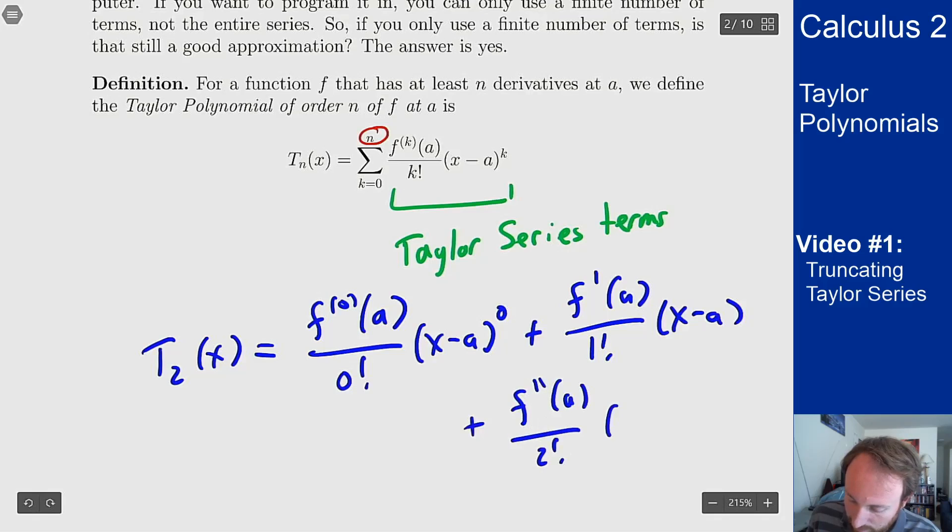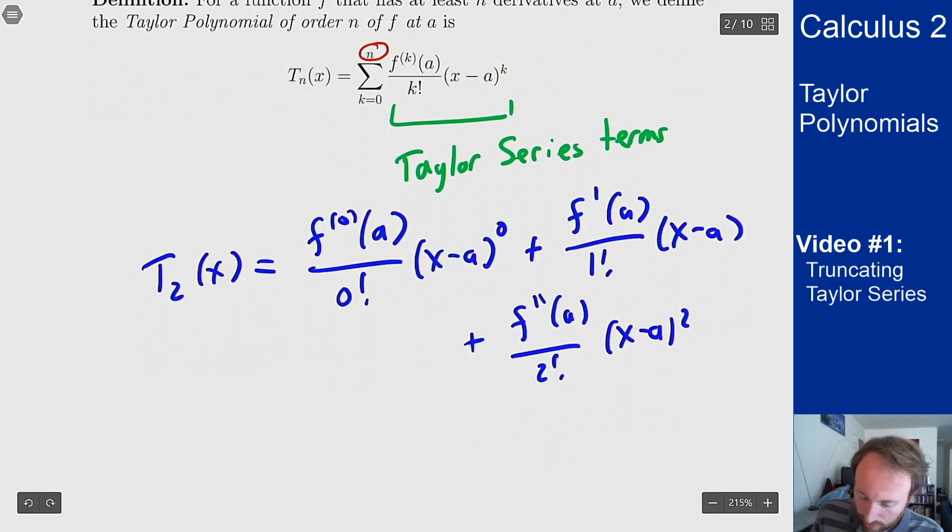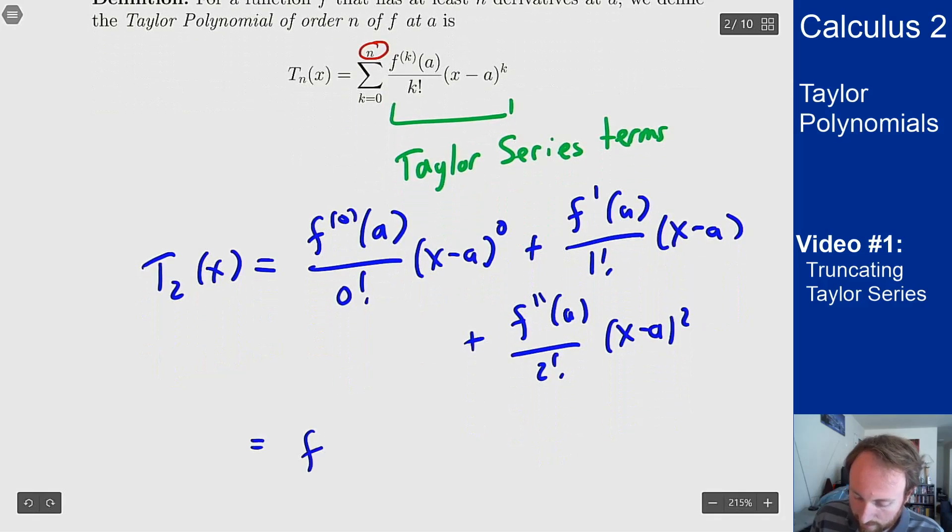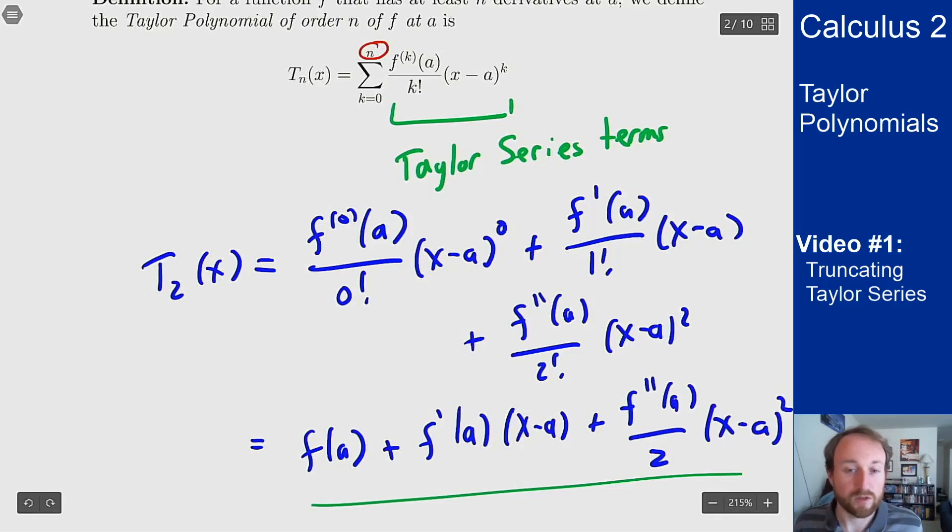Or simply, f(a) + f'(a)(x-a) + f''(a)/2! (x-a)². The point is I'm basically taking my Taylor series and only writing out the first n terms.